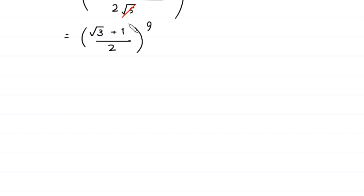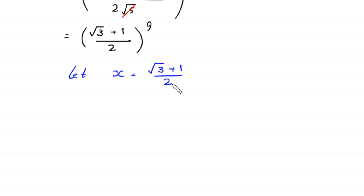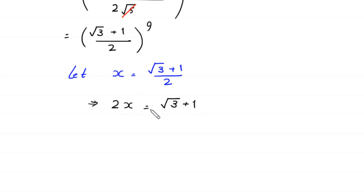Now suppose this expression square root of 3 plus 1 over 2 is equal to x. Let x equal square root of 3 plus 1 over 2. If we multiply both sides by 2, this implies 2x equals square root of 3 plus 1. Moving the plus 1 to the left side gives 2x minus 1 equals square root of 3.